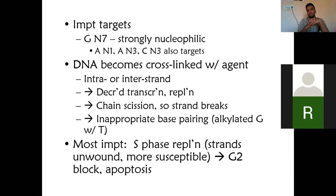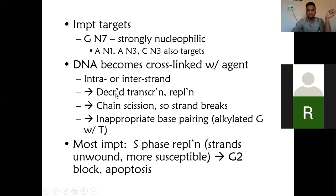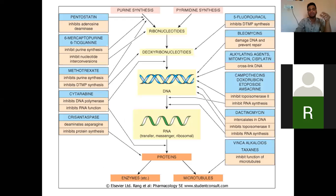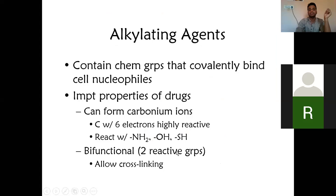The important target where alkylating agents act is guanine — specifically at nitrogen 7 position. They can also target adenine at nitrogen 1 or nitrogen 3, or cytosine at nitrogen 3. Because of this cross-linking, the DNA gets linked — either intrastrand or interstrand — and this decreases transcription and replication. If transcription and translation don't happen, proteins cannot be formed.